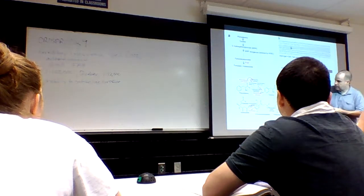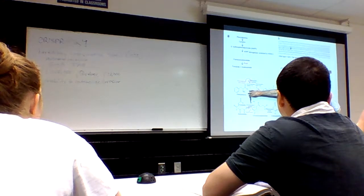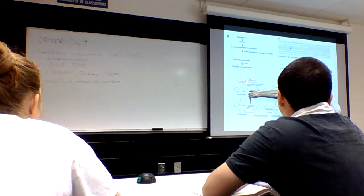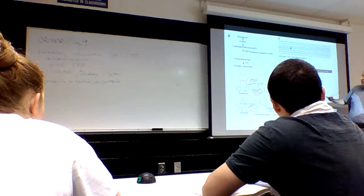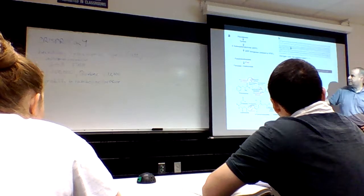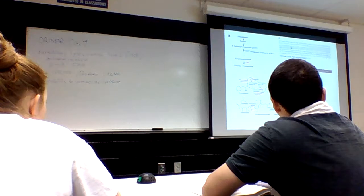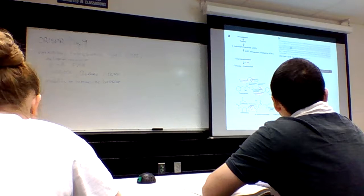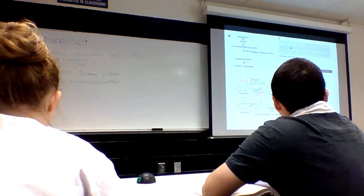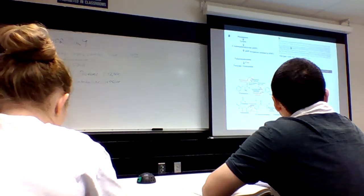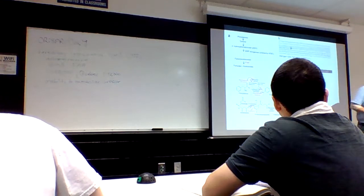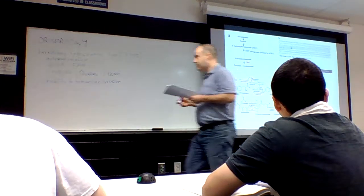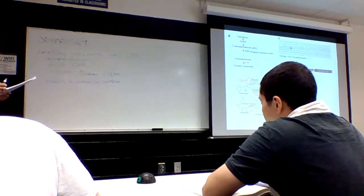Tyrosinemia type 1 is a defect in the fumarylacetoacetase enzyme, or FAH. It results in an accumulation of intermediates, and that accumulation is toxic to the liver - so we have liver toxicity, eventually resulting in death. It causes acute liver injury and loss of weight in mice.